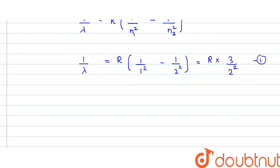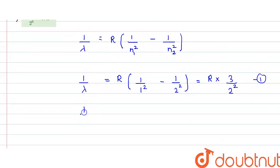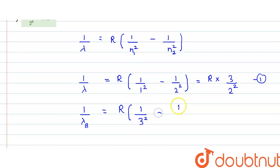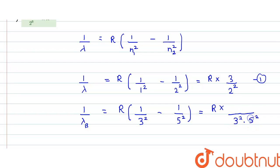For the Paschen series beta line, we apply the same formula: 1/lambda_beta = R times (1/3² − 1/5²). Taking the LCM of 3² and 5², the numerator becomes 25 minus 9, which equals 16. So 1/lambda_beta = R times 16 divided by (3² × 5²). This is our Equation 2.